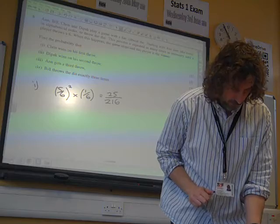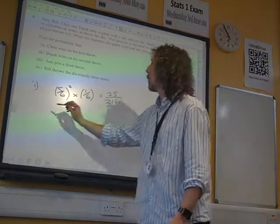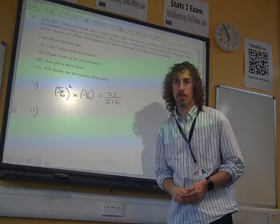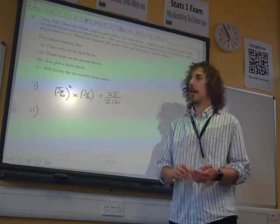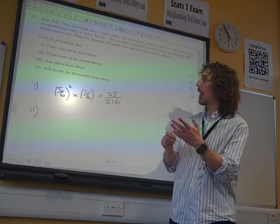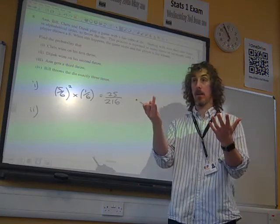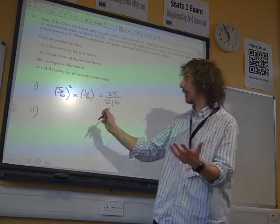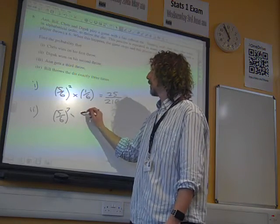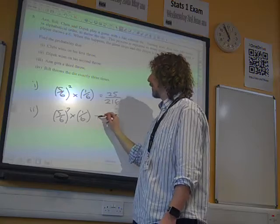Brilliant start. Right, what about the probability that Deepak wins on his second throw? So what would have happened then? A, B, C and D would have failed, followed by A, B and C failing. So we would have had seven failures, followed by the one success.